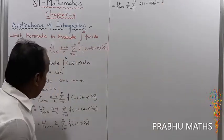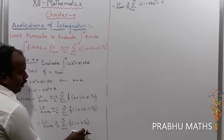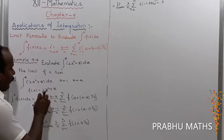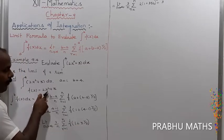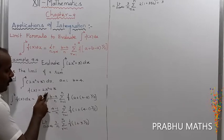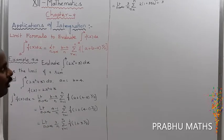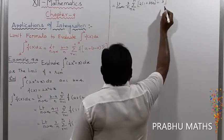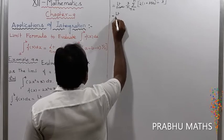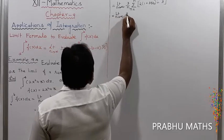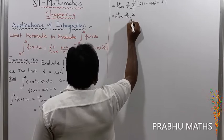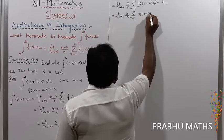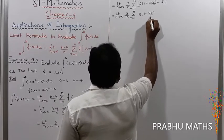This is a very important step. f(x) equals 2 into (1 + 3r/n)² plus 3. Expanding (1 + 3r/n)², using (a+b)² = a² + 2ab + b², this gives 1 plus 9r²/n² plus 6r/n. So the expression becomes limit n tends to infinity 3 by n, summation r from 1 to n, of 2 into (1 + 9r²/n² + 6r/n) plus 3.